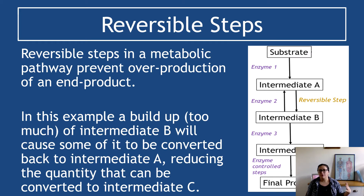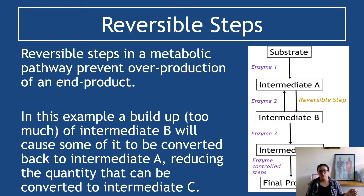In this example, a buildup of too much intermediate B will cause some of it to be converted back to intermediate A, reducing the quantity that can be converted to intermediate C, and that prevents overproduction of the final product. That is useful because, thinking about ATP production, too much ATP is really bad for your cells — you burn through your energy supplies too quickly, you're going to run out and die. Being able to control this so there's not too much and not too little is absolutely crucial.